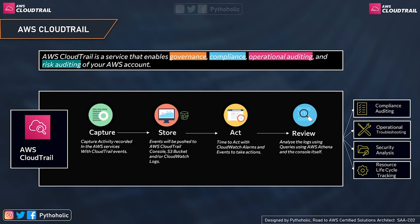The fourth pillar is Review: we push CloudTrail events to S3 buckets and use AWS Athena to analyze the logs. Once CloudTrail is enabled, it helps with: Compliance Audit — demonstrating that AWS resources were managed according to regulatory standards; Resource Lifecycle Tracking — tracking a resource from creation to deletion including permission changes; Operational Troubleshooting — identifying recent changes and who made them; and Security Analysis — seeing which user activities fail due to inadequate permissions.